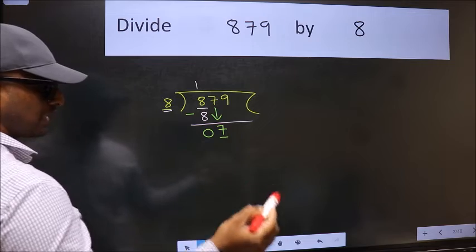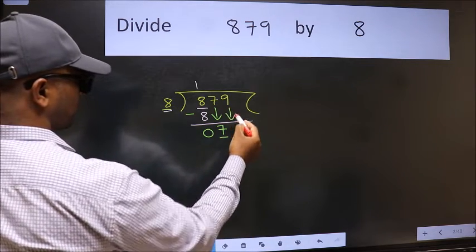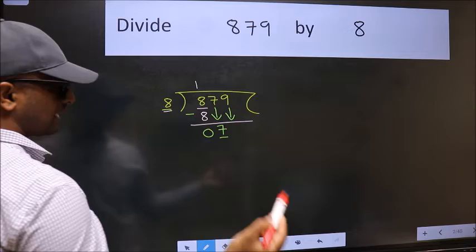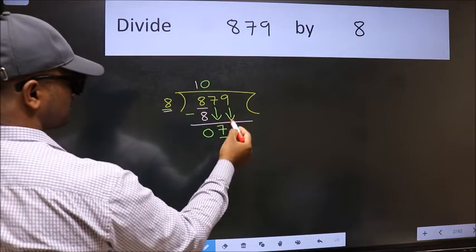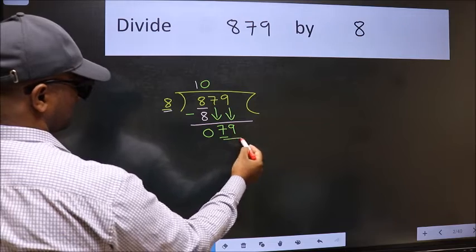So we should bring down the second number, and the rule to bring down second number is we should put 0 here. Then only we can bring this number down. Now 79.